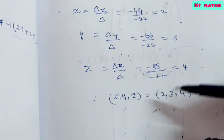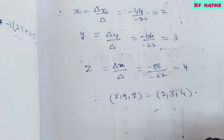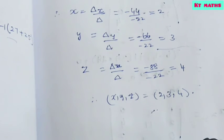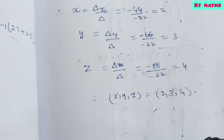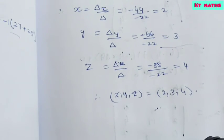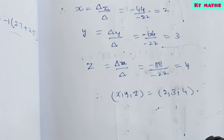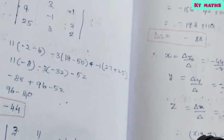So in this video, exercise 1.4, first part, third sum is solved using Cramer's rule. Hope you understood how to apply the rule step by step.